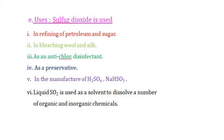Uses of sulfur dioxide: it is used in refining of petrol and sugar, bleaching of wool and silk, as an anti-chlor, disinfectant, and preservative, in the manufacture of sulfuric acid and sodium hydrogen sulfite, and liquid SO2 is used as a solvent to dissolve a number of organic and inorganic chemicals.